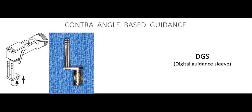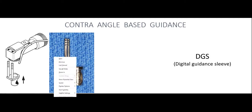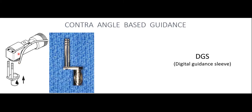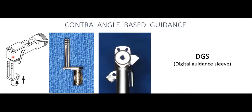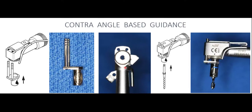The device is called a DGS — Digital Guidance Sleeve. It fits inside the head of a special contraangle that comes as part of the kit. The contraangle has two holes, and two rods on the DGS fit into the contraangle so everything fits together as one unit. Drills fit in and out of the DGS and are changed as we require different lengths or diameters.